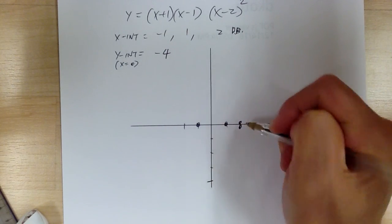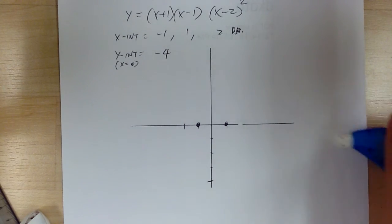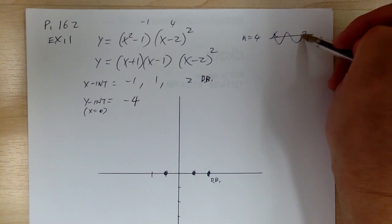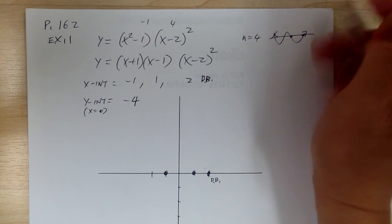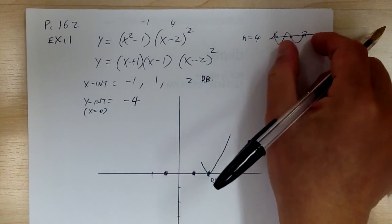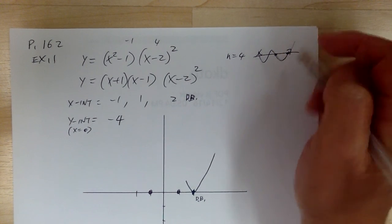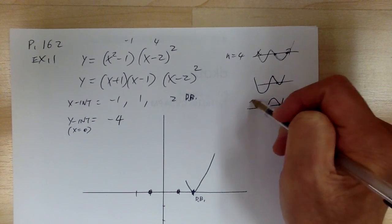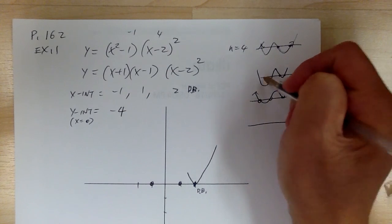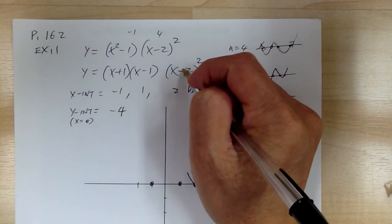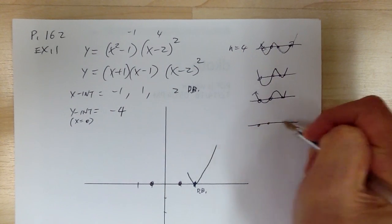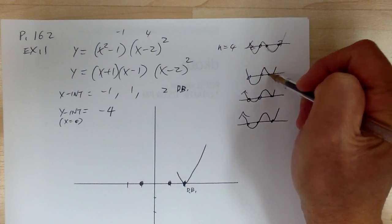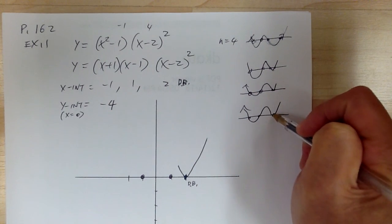At x = 2, it's a double root — think of it as two points merging into one. Normally the graph would cross through two separate points, but as those two points get closer and closer together they merge. When they become one, the graph just touches and turns back — it does not go through. So when it's an even power multiplicity, it will not go through.